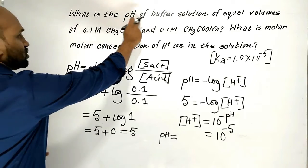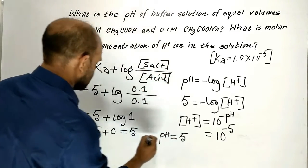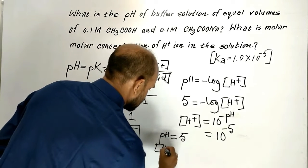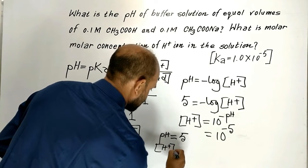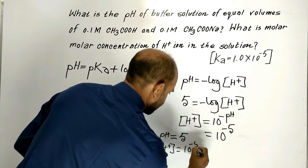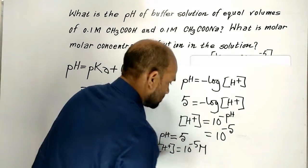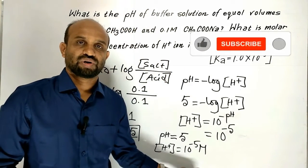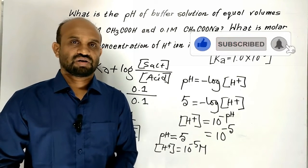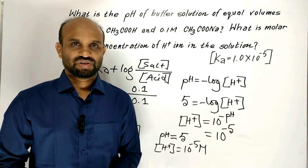To summarize: the pH of the buffer solution is 5, and the concentration of hydrogen ion is 10⁻⁵ mol per liter. Thank you very much.